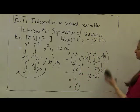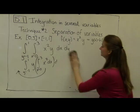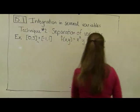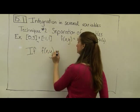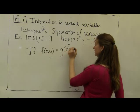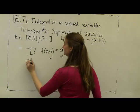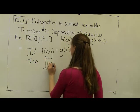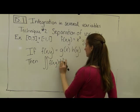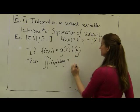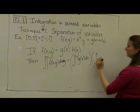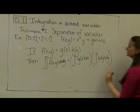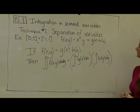The moral of the story — and this is what we'll generalize — if f(x, y) can be written as a function g(x) times a function h(y), then I can break apart the double integral. The double integral of f(x, y) dx dy equals the single integral of g(x) dx multiplied by the single integral of h(y) dy. Sometimes this saves you work, saves some penmanship, and can make your integration look cleaner and less sloppy.